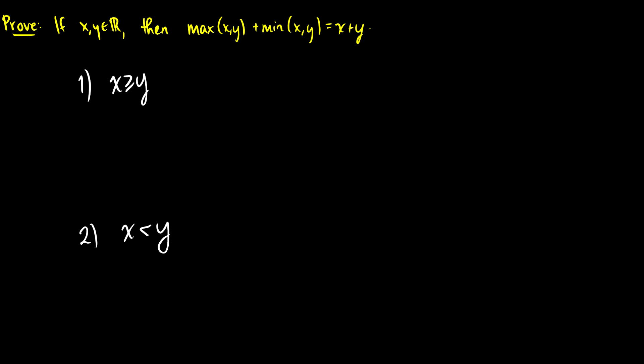So in the first case, what do we know? We know that the min of x and y, well x is greater or equal to y, so the minimum is going to be y, and the maximum of x and y is going to be x. So of course, if we add these two together, then we're going to get x plus y.